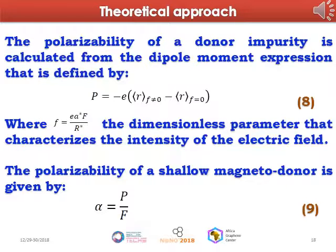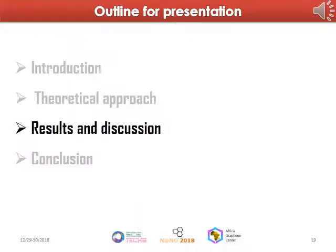The polarizability alpha is given by expression number nine, where P is the dipole moment defined by the difference of the average value of R in the presence and absence of the electric field. Now we present our results and discussion.